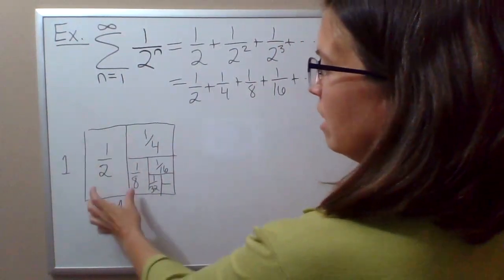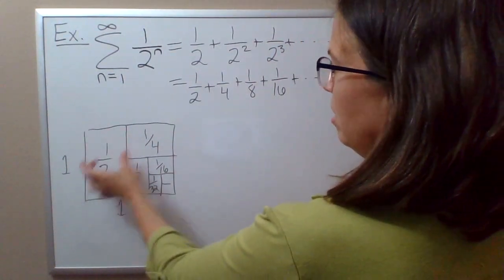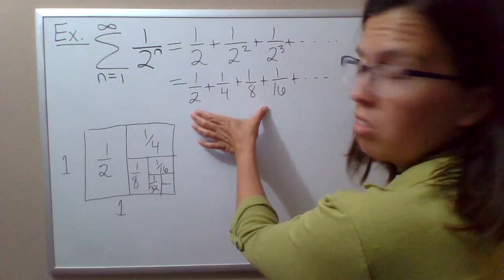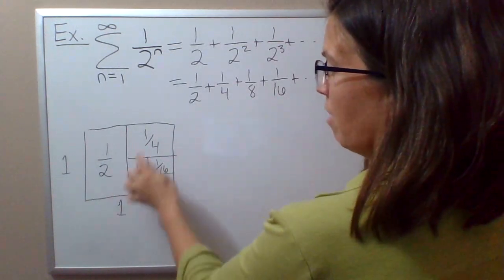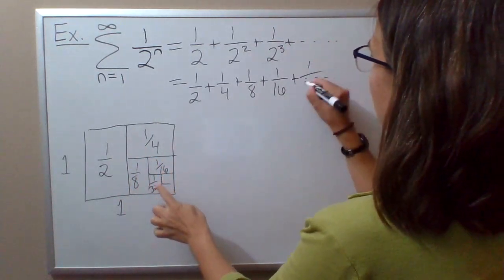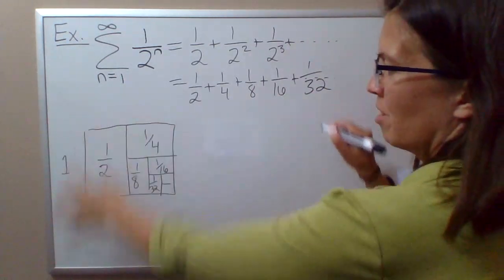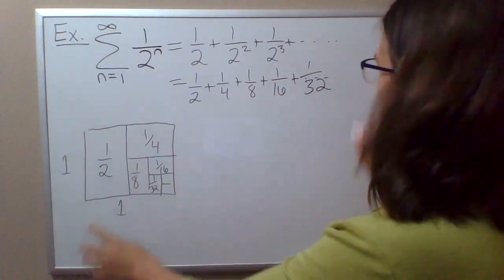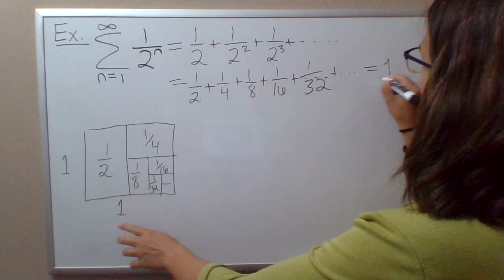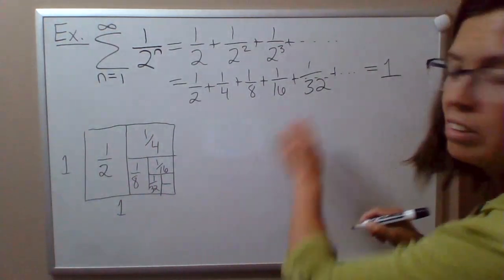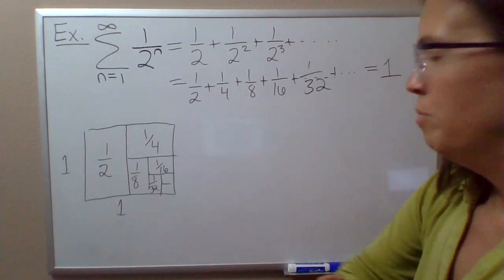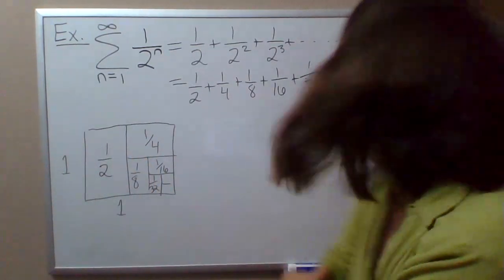If you take the sum of the area of each piece here, it matches the terms in this infinite sum: 1 half plus 1 fourth plus 1 eighth plus 1/16th plus 1/32nd. We can see with this representation that the infinite sum should converge to 1, that's the overall area of this square.